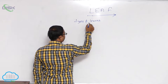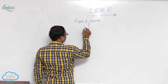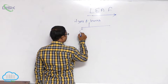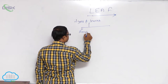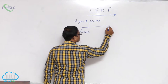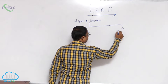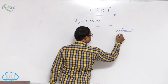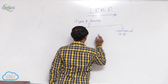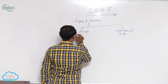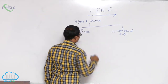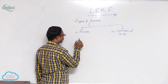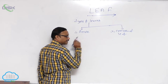There are generally two types of leaves: the first one is the simple leaf, and the second one is the compound leaf. A simple leaf can be lobed or entire.